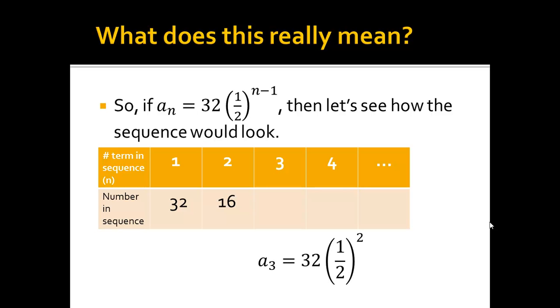Do the same thing with 3, just subtract 1, and I get 2, put that as the exponent. 1 half squared times 32, so that's basically dividing 32 by 2 twice, I get 8.